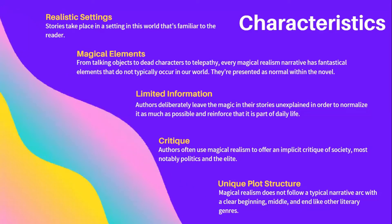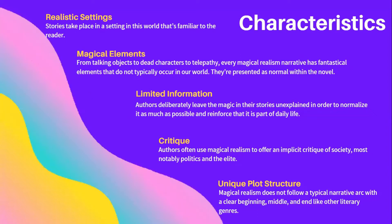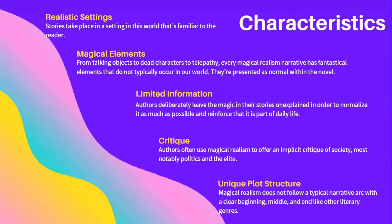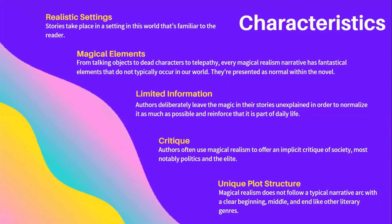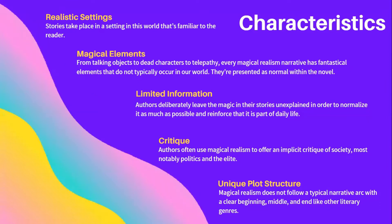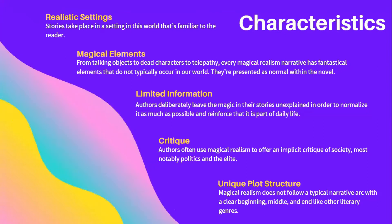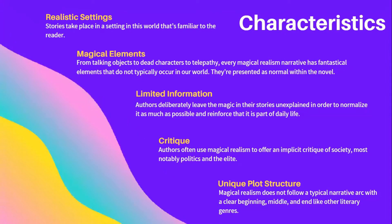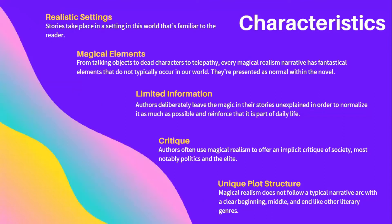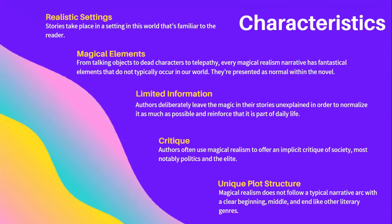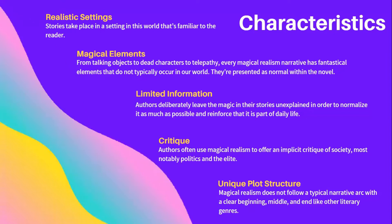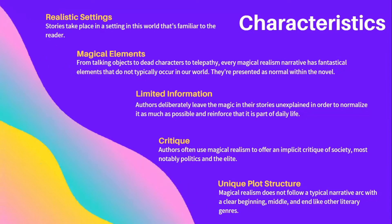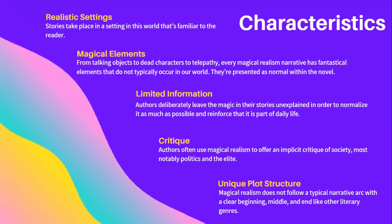Every magical realism narrative is different, but there are certain things they all include, such as realistic settings. All magical realism stories take place in a setting in this world that's familiar to the reader. There are magical elements from talking objects to dead characters to telepathy. Every magical realism narrative has fantastical elements that don't typically occur in our world. However, they're presented as normal within the novel.